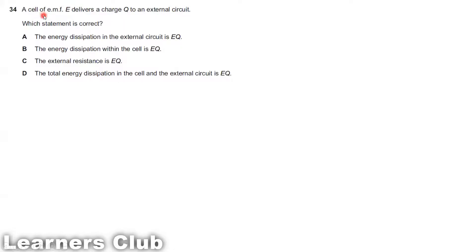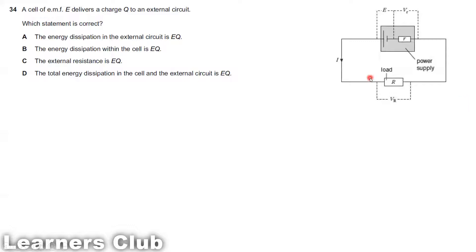Question 34: A cell of EMF E delivers a charge Q to the external circuit. The cell has an internal resistance with lost voltage Vr, and externally there is a load resistance with terminal PD. Option A states the energy dissipated in the external circuit is EQ — this is incorrect, because some energy is lost in the internal resistor.